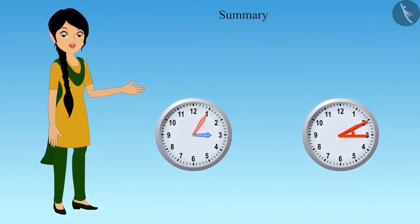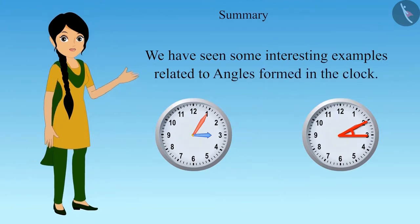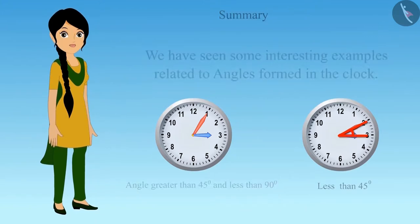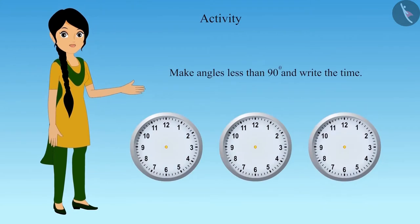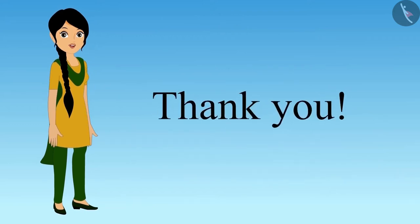So, children, in this video, we have seen some interesting examples related to angles formed in the clock. Now, you make 3 clocks in your notebook and mark 3 angles less than 90 degrees in it. Write the time along with it. You can seek the help of your friends and teachers in this activity. Thank you.